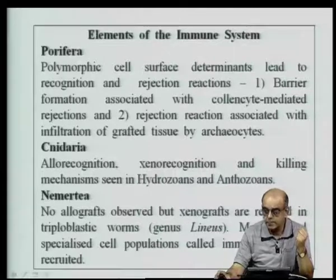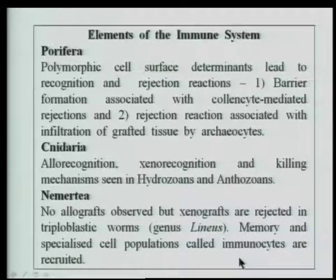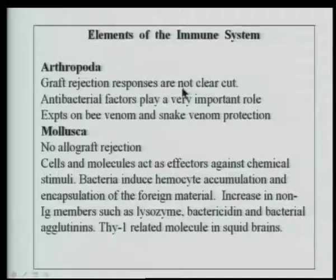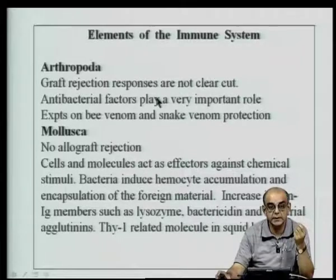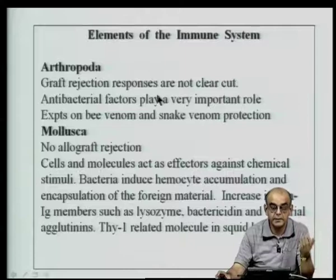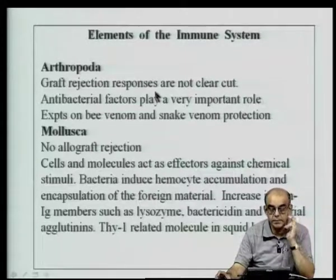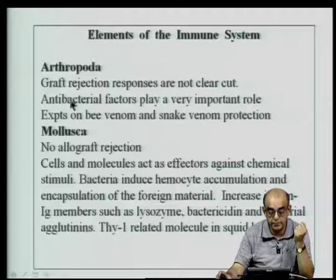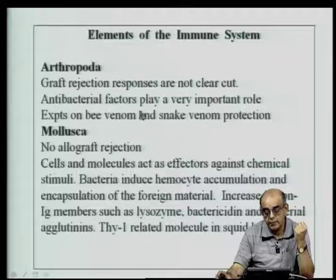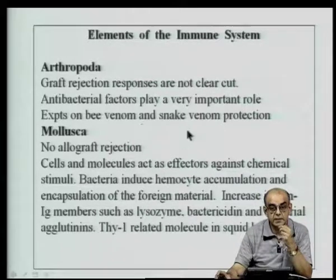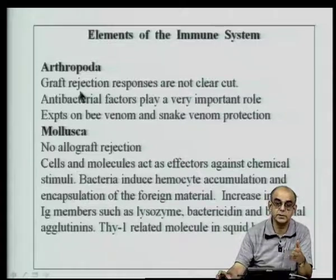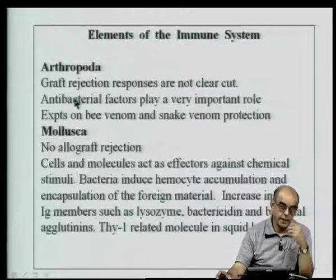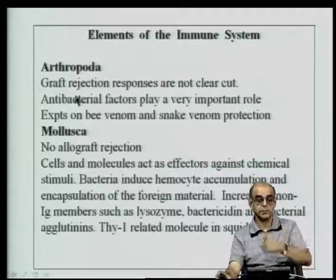Memory and specialized cell populations called immunocytes are recruited within these organisms. In arthropoda, graft rejection reactions are not very clear-cut and cannot be definitively pinned down. There are antibacterial factors which are the major mechanism by which they combat organisms, and there are many experiments that have been done with bee venom and snake venom injected into cockroaches to see what mechanism is put into action.